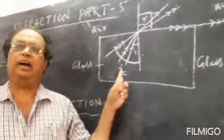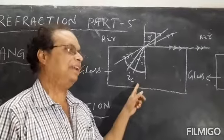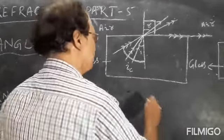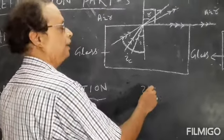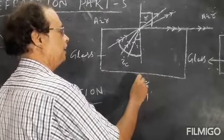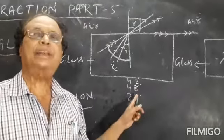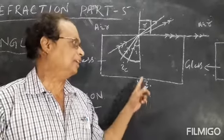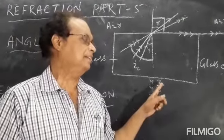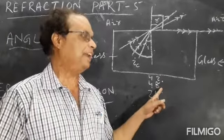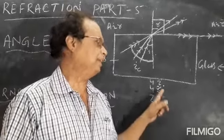Similarly, for water and air the critical angle is 48 degrees, and for diamond it is 24 degrees. So the critical angle is different for different pairs of medium — water: 48°, glass: 42°, diamond: 24°. It depends on the nature of the medium.